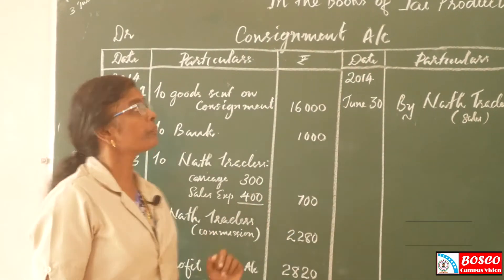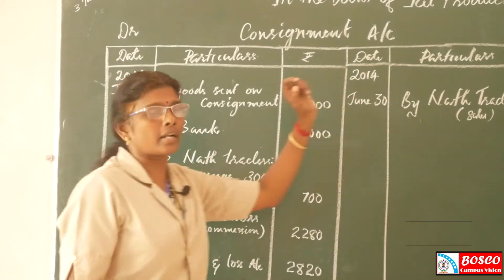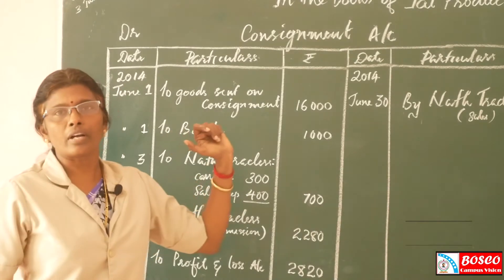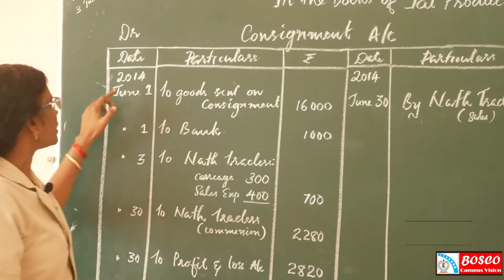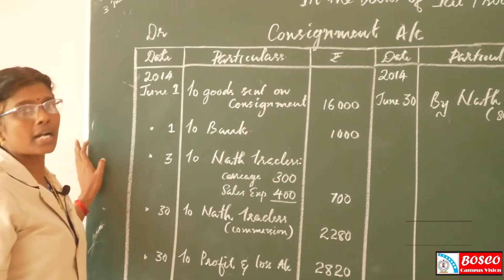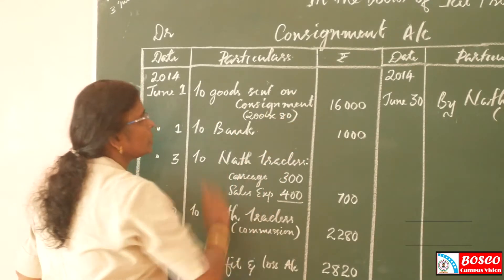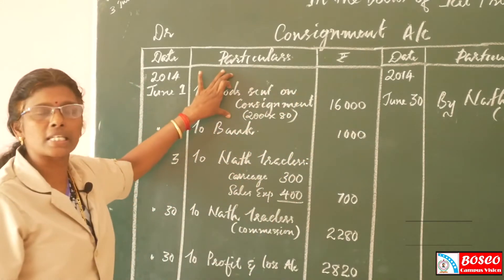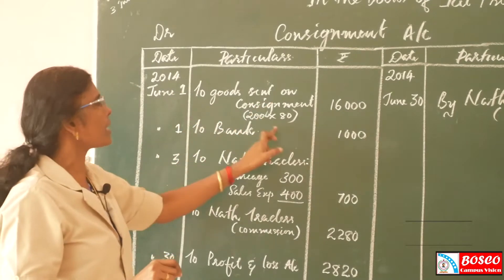How to prepare the consignment account? First, on 1st June 2014, J. Products sent goods to North Traders. The value is Rs. 16,000 — that is, 200 kettis at Rs. 80 each. The first item is goods sent on consignment to North Traders, debiting the consignment account at Rs. 16,000.